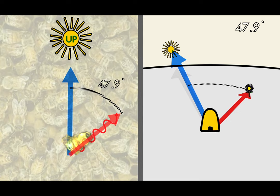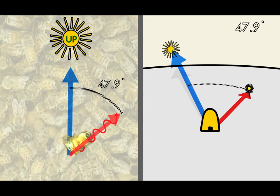So if the bee dances directly upward, other bees know that they can find flowers by flying directly towards the sun.